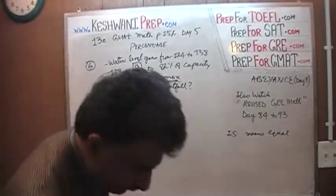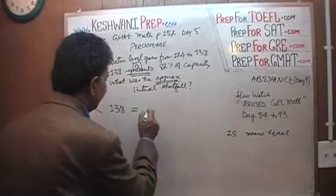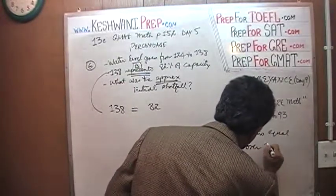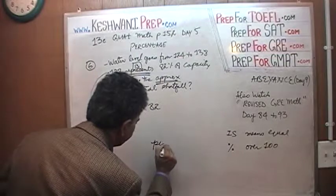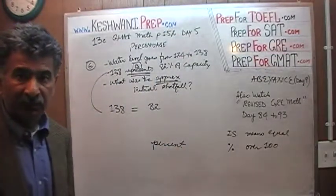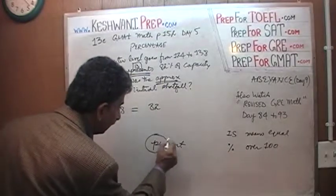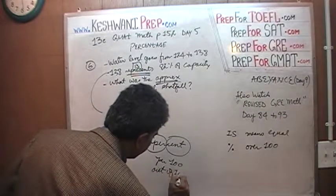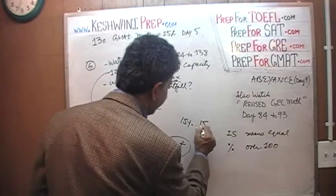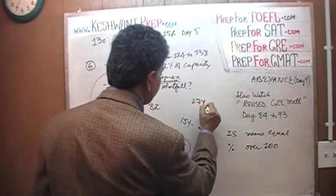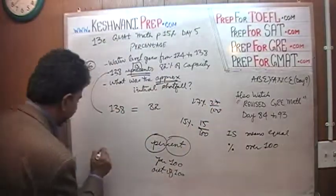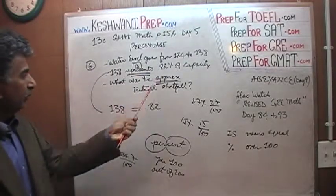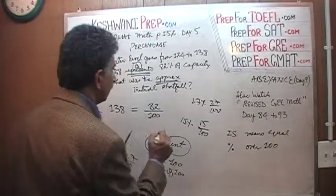So is means equal. 138 represents 82, 82 percent means over 100. Per 100. The word percent, what does it literally mean? Percent literally means exactly what it says. It says per 100, out of 100. 15 percent means 15 out of 100. 27 percent means 27 out of 100. 34.7 percent means 34.7 out of 100. Percent means over 100. So 82 percent means over 100.